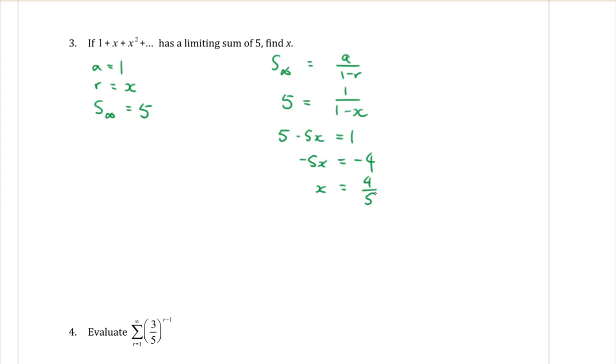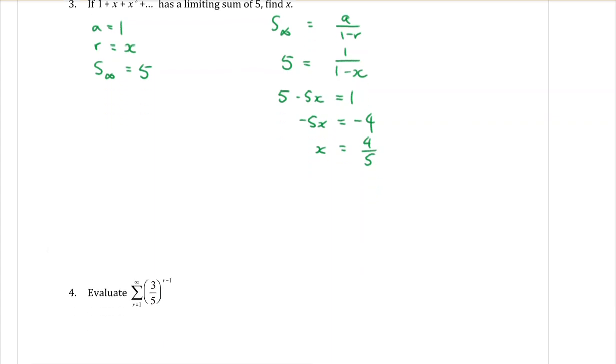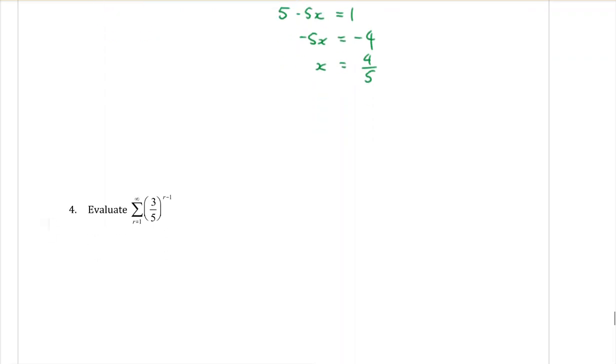And question four in our sigma notation. You can see because we have the little infinity symbol up here is asking you to do a limiting sum. So let's get an idea of what's happening with this series though.